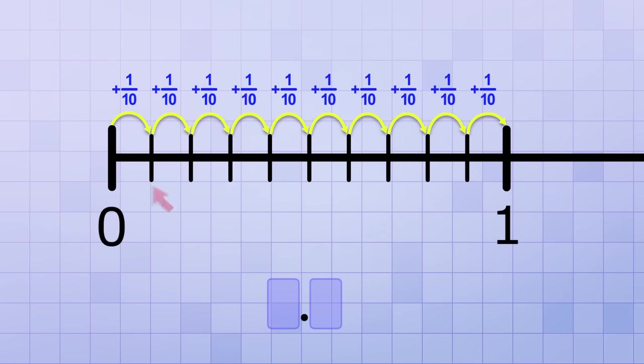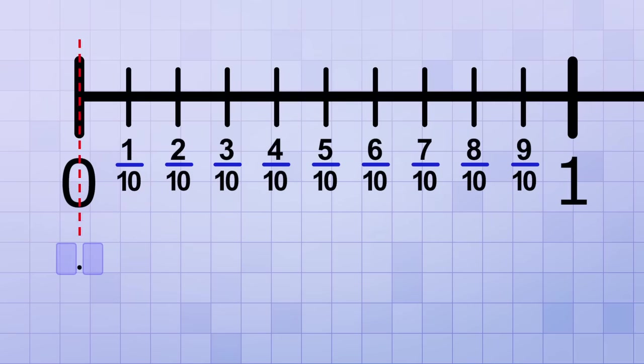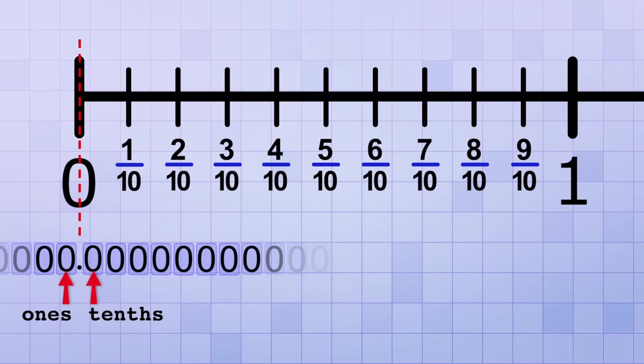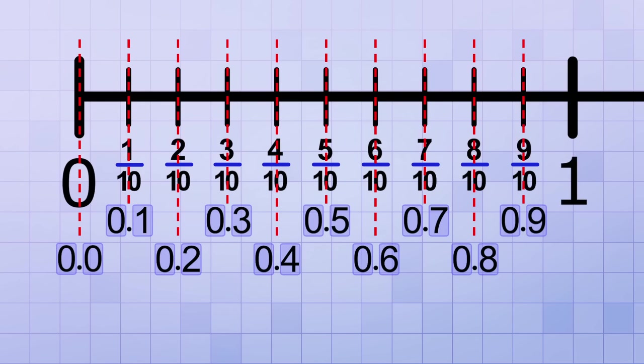Each one of these new marks is the fraction 1 tenth apart. So after 0, this first mark is 1 tenth, and this second mark is 2 tenths, the third is 3 tenths, and so on. And remember, we have a decimal number place immediately to the right of the decimal point that's specifically used for counting tenths. Using that decimal number place also, this first mark has the decimal value 0.0 because it represents 0 ones and 0 tenths. The next is 0.1 because we have 0 ones and 1 tenth. The next is 0.2 because we have 0 ones and 2 tenths. And the pattern continues on like that until we get to the number 1, which can be shown as the number 1 in the ones place and 0 in the tenths place. Because it's a whole number, it doesn't need any decimal digits, but we can put a 0 in them if we'd like.